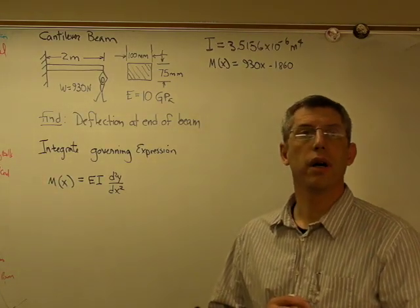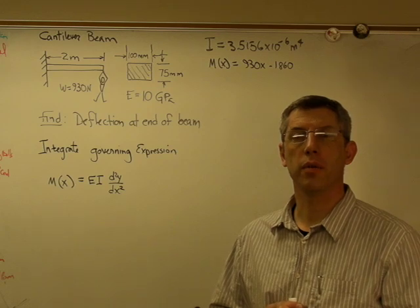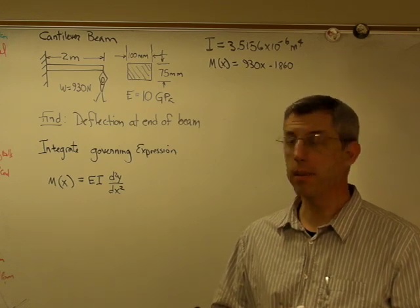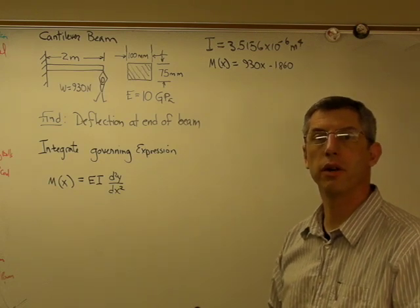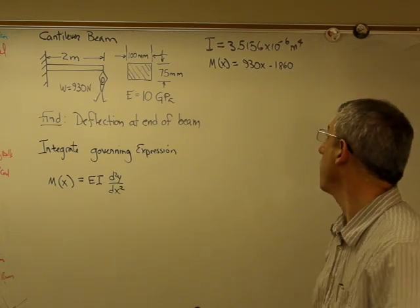This is the second part of our example on working with a cantilevered beam. Remember we have a cantilevered beam with a weight on the end of it of 930 newtons. We're going to finish the problem up here.